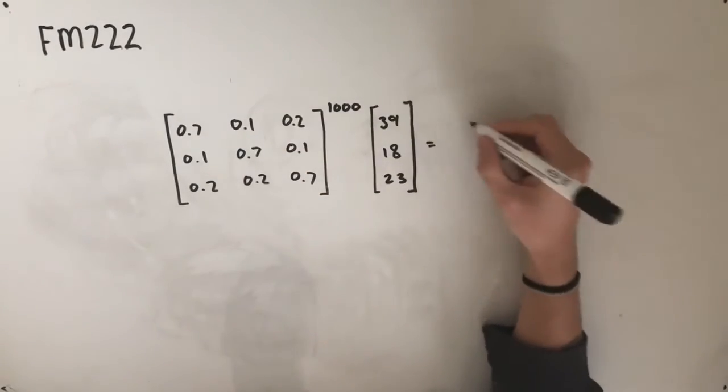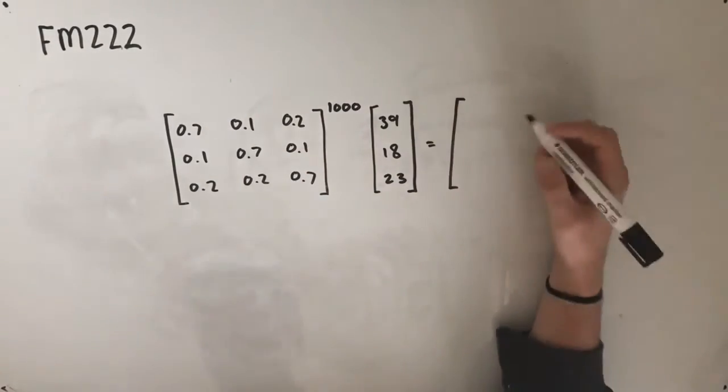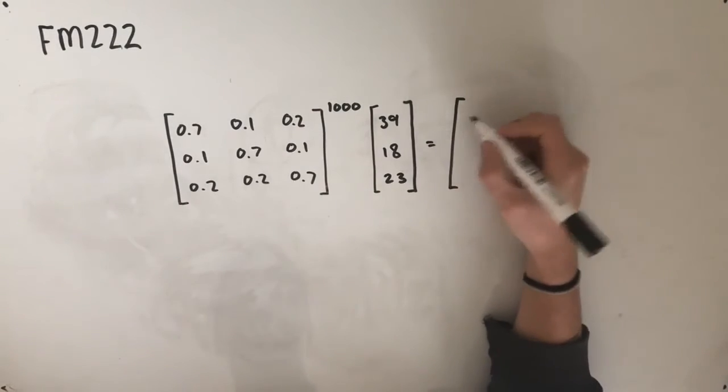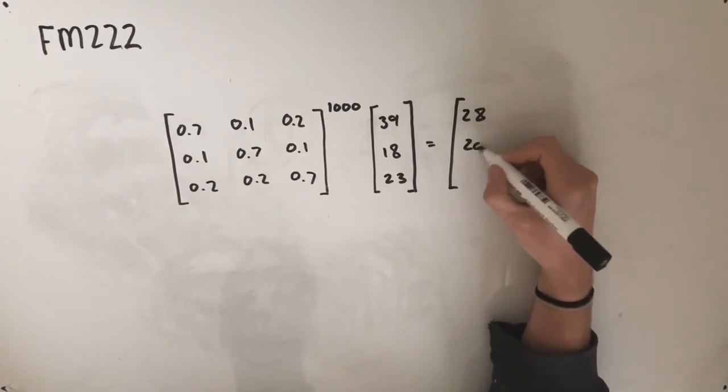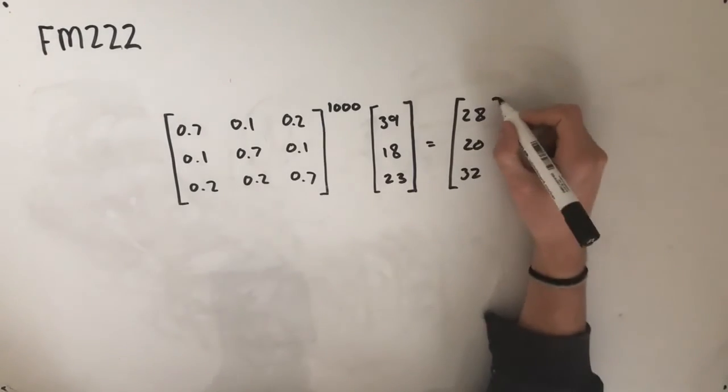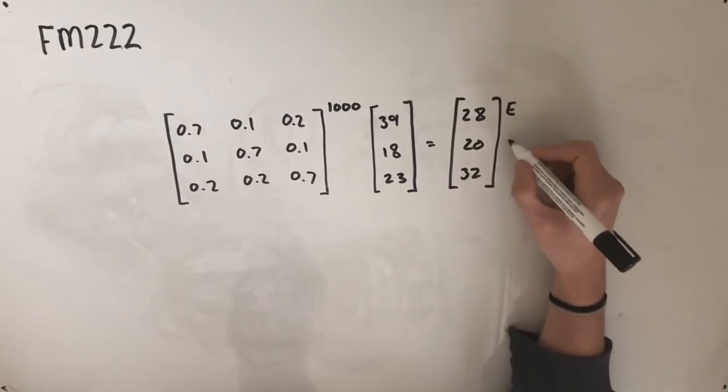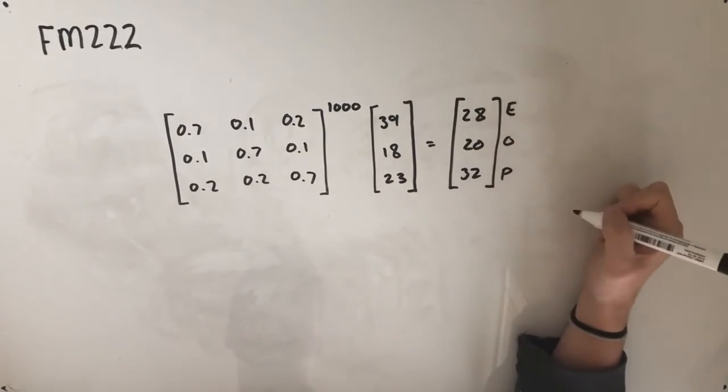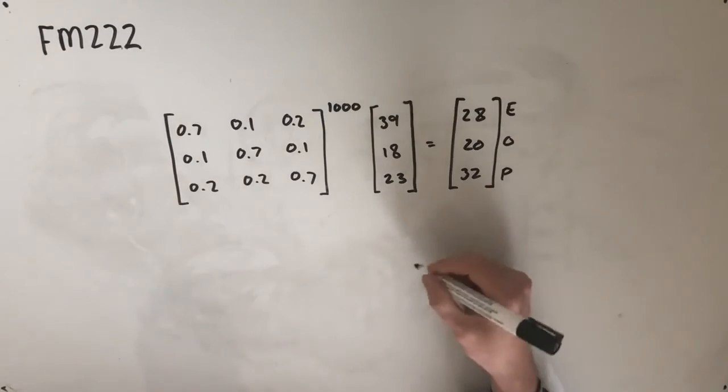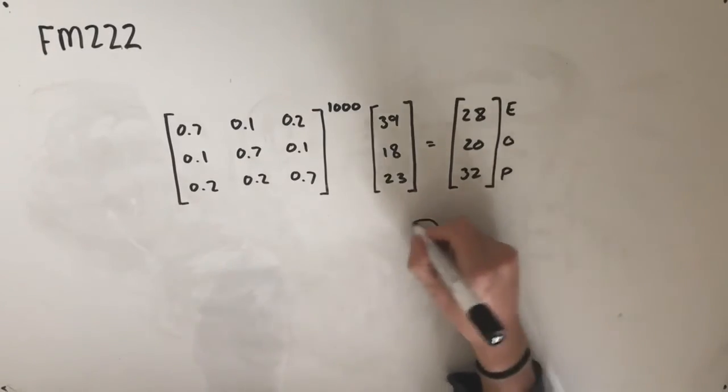Popping this into your calculator, you should get an answer of 28, 20, and 32. So we've got 28 for the English breakfast, 20 for the omelettes, and 32 for the pancakes. This means the answer to our question is option A.